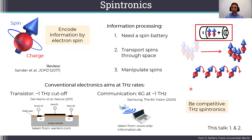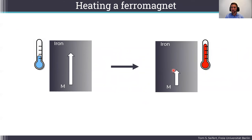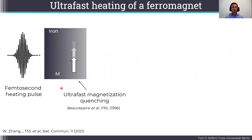Let's go to the first step — the battery. How can we build an ultrafast spin battery? Imagine you have a piece of iron, magnetized in one direction at a certain temperature. When you heat up that piece of iron, the magnetization decreases, meaning some spins have dissipated their angular momentum to other degrees of freedom such as the lattice. To do this in an ultrafast manner, you take a femtosecond optical laser pulse, illuminate your thin iron film, and you get an ultrafast quenching of the magnetic order. That has been known for a long time.